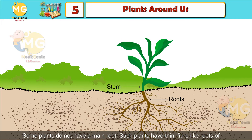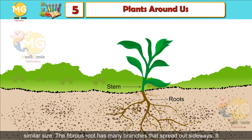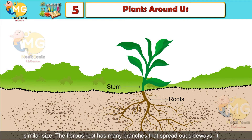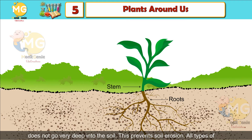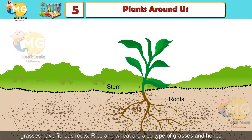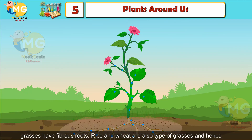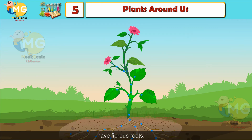Some plants do not have a main root. Such plants have thin, fiber-like roots of similar size. The fibrous root has many branches that spread out sideways and does not go very deep into the soil. These roots prevent soil erosion. All types of grasses have fibrous roots; rice and wheat are also types of grasses and hence have fibrous roots.